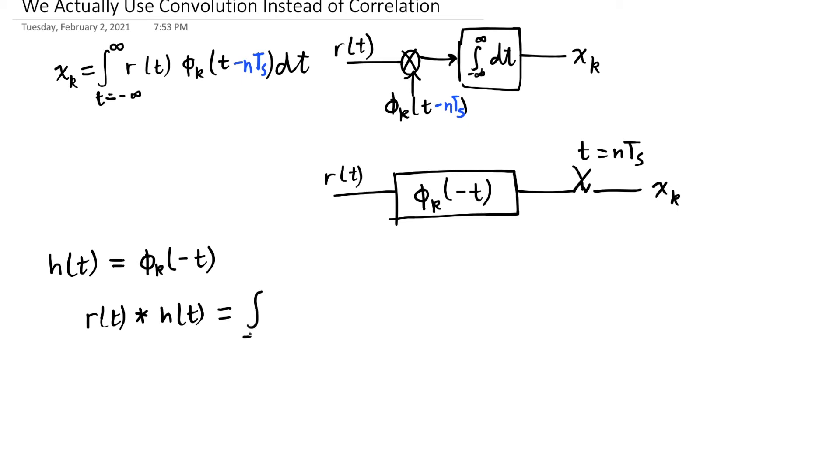r of t convolved with h of t is an integral over some dummy variable tau over all time of the received signal as a function of tau multiplied by h of t minus tau. This gives us the filter output.